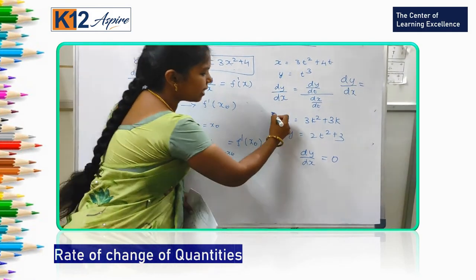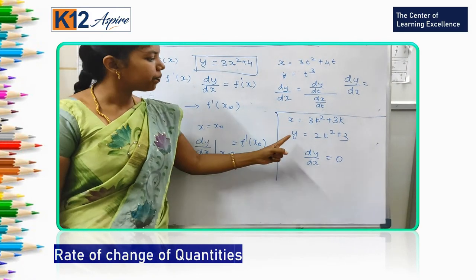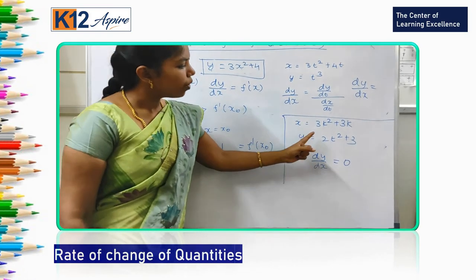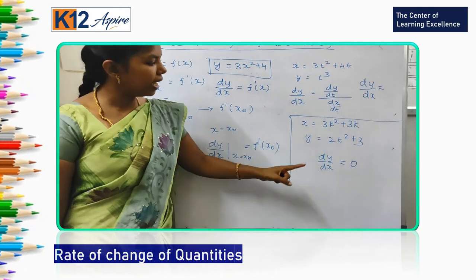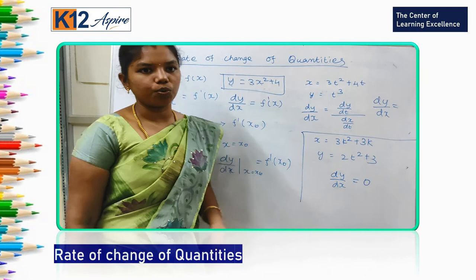But here in this example you see x equal to 3k square plus 3k, y is equal to 3t square plus c. Here there is no dependency in between x and y. So here we cannot take dy by dx. If you derive means you will get 0 only.